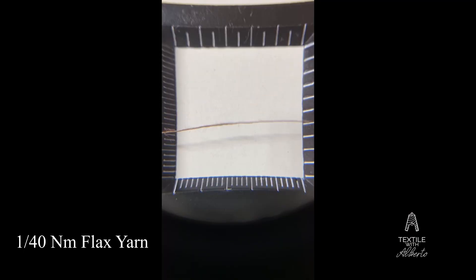The first yarn is a 140 metric number and it's flux. As you can see, if I try to separate the plies I cannot separate them because it's a single ply. If you need to better understand the yarn counts, I will leave my video regarding direct and indirect system below.